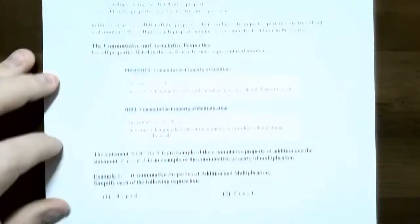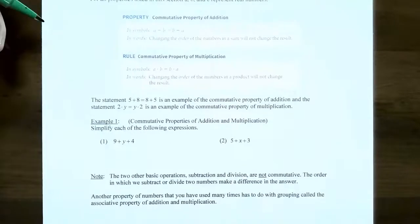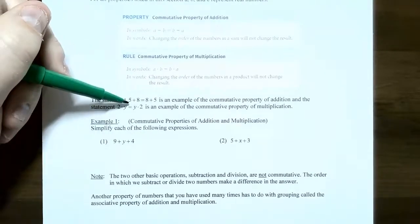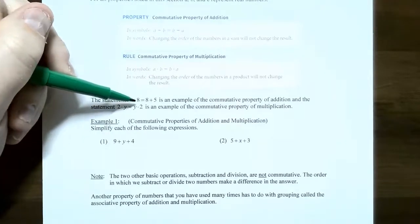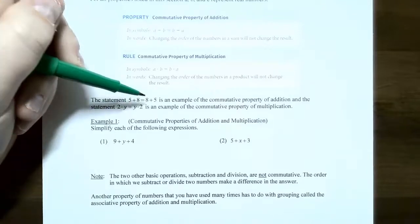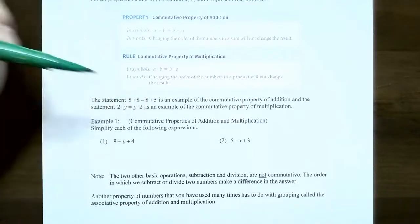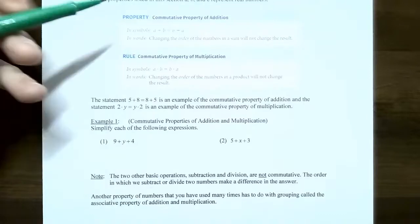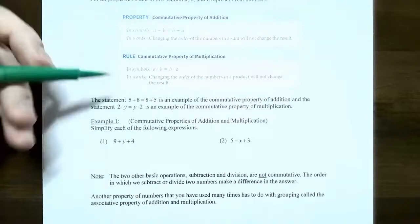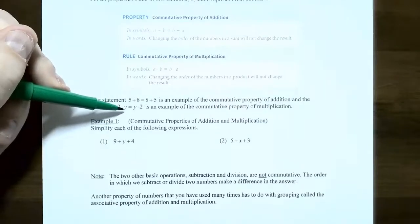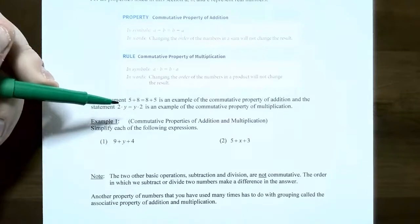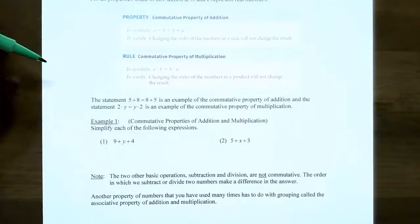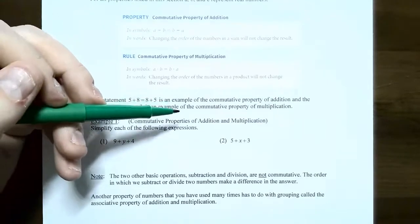Here's an example of the commutative property for addition. If you start with 5 and add 8, that would be the same as starting with 8 and adding 5. Both answers will still be 13 — it doesn't matter what order you add in, the sum will always be the same. Same thing with multiplication: you can start with 2 and multiply by y, or start with y and multiply by 2, and you'll get the same answer either way. This is called the commutative property of multiplication.